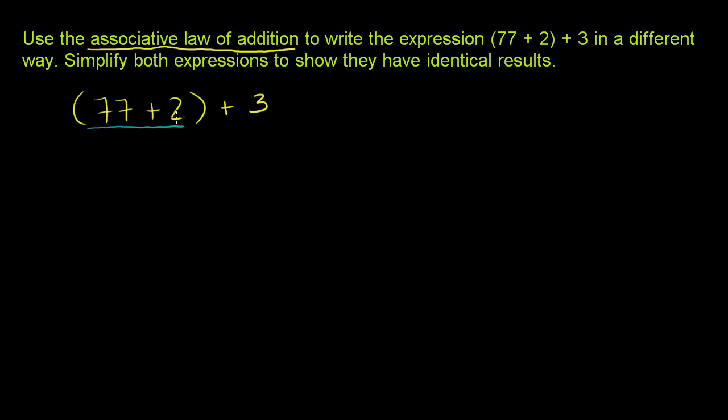So you'd say, well, 77 plus 2, that's 79. So everything in the parentheses just evaluates to 79, and then you still have that plus 3. And 79 plus 3 is 82. So this is equal to 82.